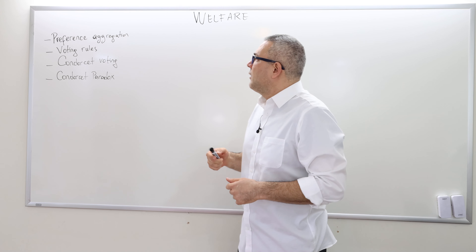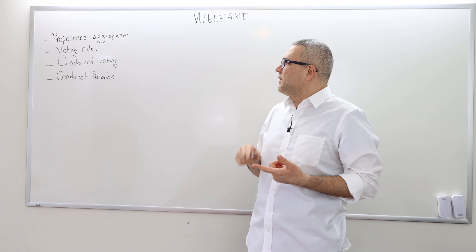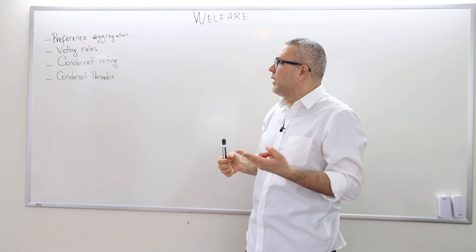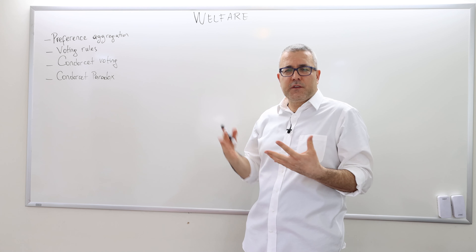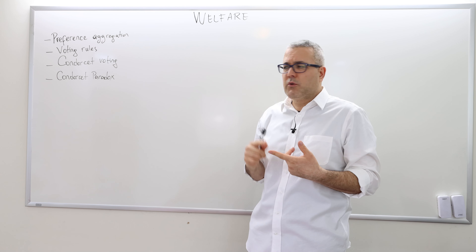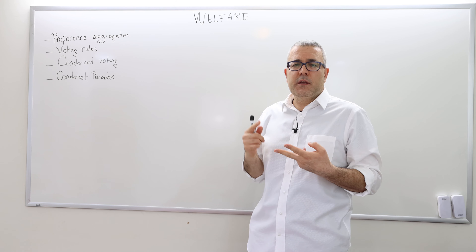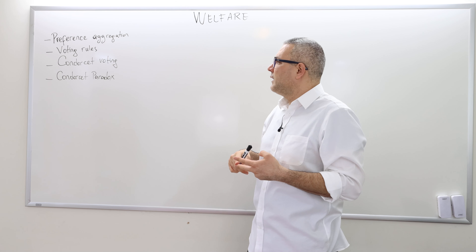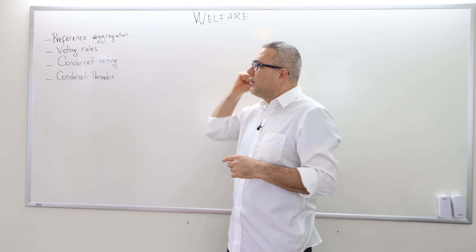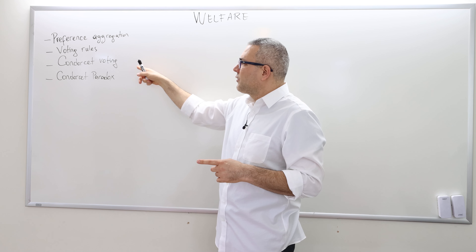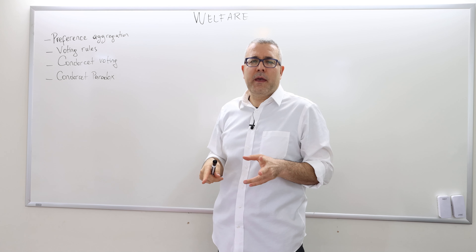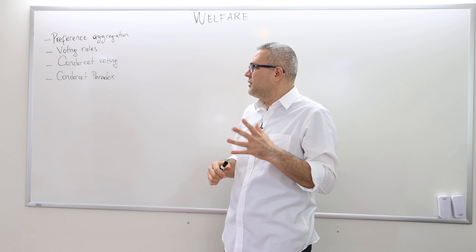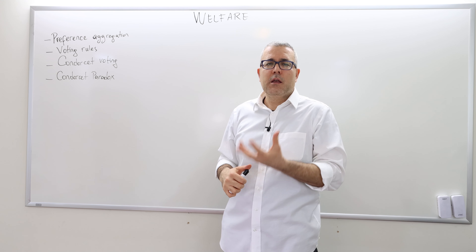Welcome back. In this video I'm going to talk about preference aggregation — what we mean by that, and voting rules. There are two ways to aggregate preferences we're going to discuss: voting rules and social welfare functions. I'll talk about social welfare functions in another video, and in this video I'll continue with Condorcet voting and then talk about one of its problems, which is what we call the Condorcet paradox.